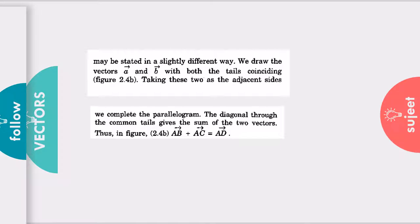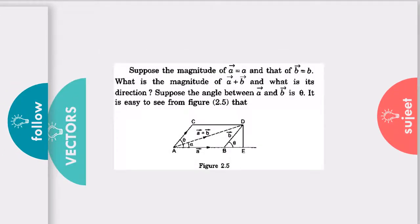As you can see, we complete the parallelogram, and now how are we going to add, which I am going to describe. Suppose there are two vectors—one vector a which is having